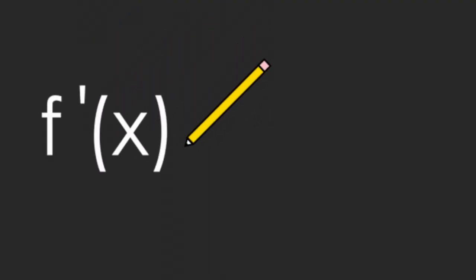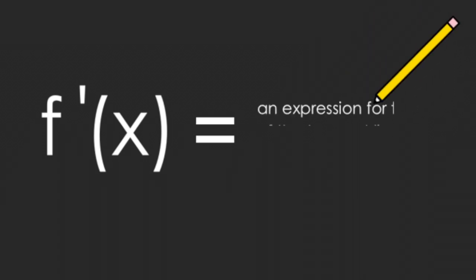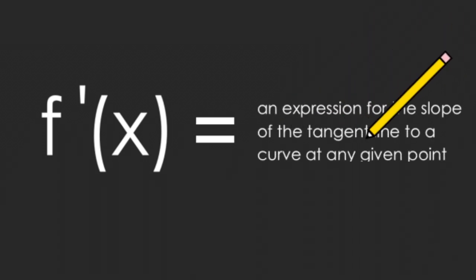To sketch the derivative of a function we first need to understand what a derivative is. A derivative is an expression which tells you the slope of the tangent line to a curve at any given point. If you're studying calculus you probably know this already or have heard it in some form. This definition will be relied on heavily throughout this demonstration.